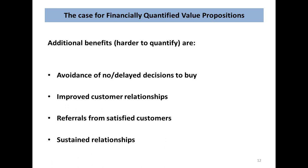There are additional benefits: avoidance of no or delayed decisions to buy, improved customer relationships, and referrals from satisfied customers. There isn't anybody on planet Earth who hasn't heard of the net promoter score, and when you get referrals through financially quantified value propositions, the NPS always goes up. And sustained relationships — even a 5% reduction in customer loss will lead to up to 75% increase in profits, according to Harvard Business Review, McKinsey, and Gartner.